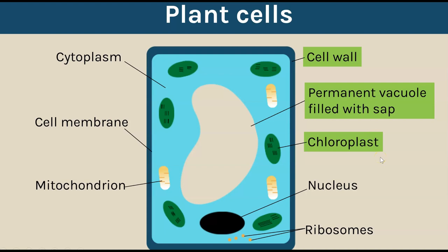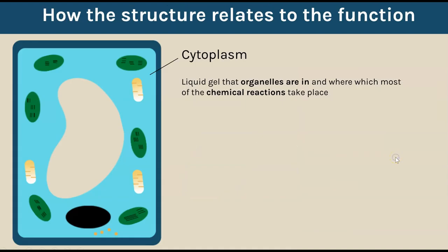Out of all those structures inside a plant cell, it's actually only three which you only find in a plant cell. That is quite a common question for this topic at GCSE - either being able to label the structures in an animal or plant cell, or suggesting structures that you find in a plant cell that you do not find in an animal cell. These would be your three potential marks for that question.